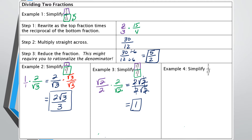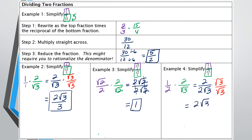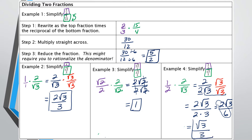Example 4: (1/2) divided by (√3/2). Multiply 1/2 by the reciprocal of √3/2, which is 2/√3. Multiplying straight across: 1 times 2 is 2 over 2 times √3. We rationalize by multiplying by √3/√3, giving 2√3 over 2 times 3, which is 2√3/6. Simplifying the 2 and 6 by dividing both by 2, the final answer is √3/3.